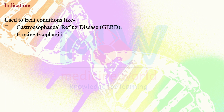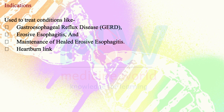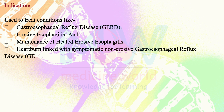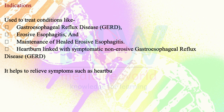Indications of dexlansoprazole: it is used to treat conditions like gastroesophageal reflux disease (GERD), erosive esophagitis, and maintenance of healed erosive esophagitis. It also addresses heartburn linked with symptomatic non-erosive gastroesophageal reflux disease, and helps relieve symptoms such as heartburn, regurgitation, and difficulty swallowing.